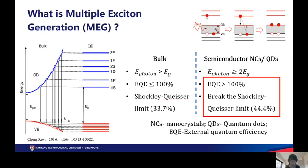As a result, the absorption of a single photon bearing twice or multiple times the band gap energy leads to more than one photo-induced carrier. This process is called multiple exciton generation, or carrier multiplication.